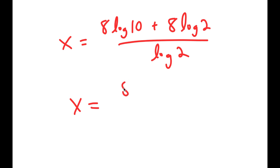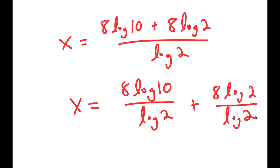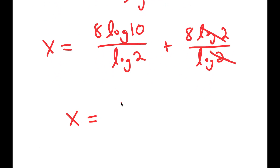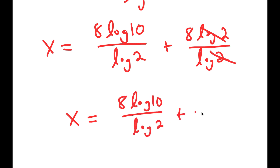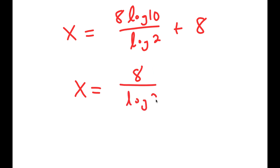This gives 8 times log 2 over log 2, and these two log 2s cancel out. So I get x is equal to 8 times log of 10 over log of 2 plus 8. And as you may know, log of 10 is just equal to 1, so I get 8 times 1, which is just 8 over log of 2 plus 8.